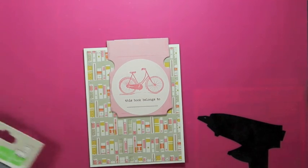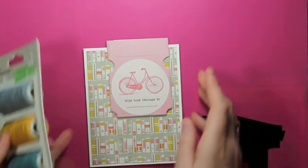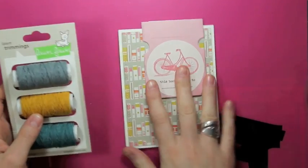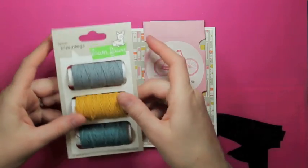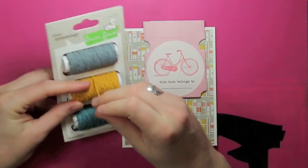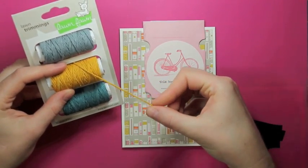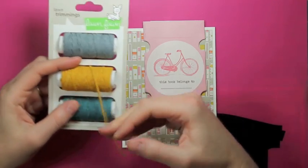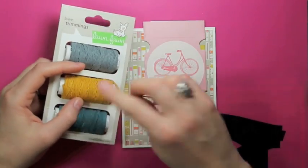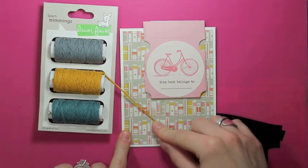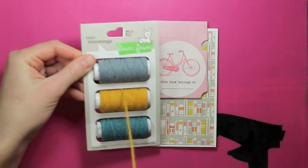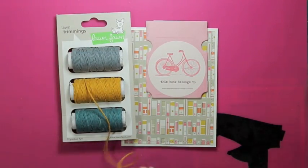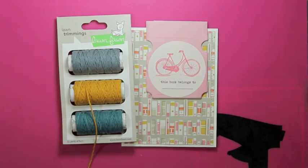And now we're going to add a little bit more embellishments to our card. These are called lawn trimmings by Lawn Fawn and basically it's pieces of cord or twine. It's a nice thick feel to it and it comes in really neat designs. But this mustard color just happens to coordinate really nicely with our card. And I like how they're on these rolls because you can just pull, they come right off and you're not going to have the tangling issues that you might with other products.